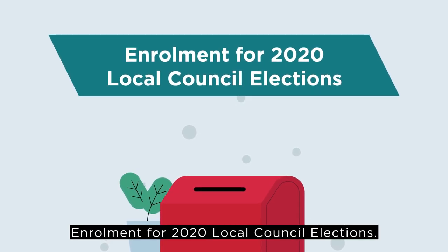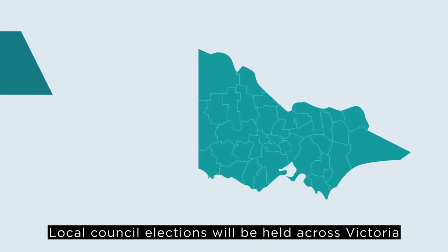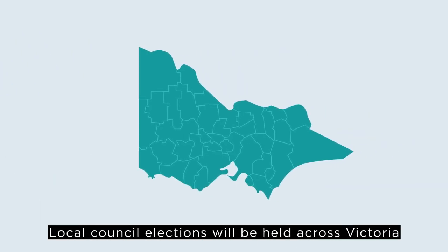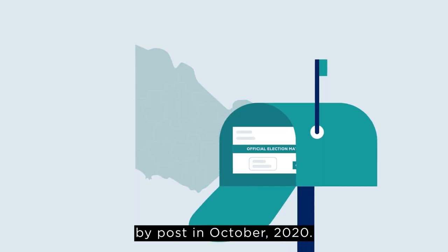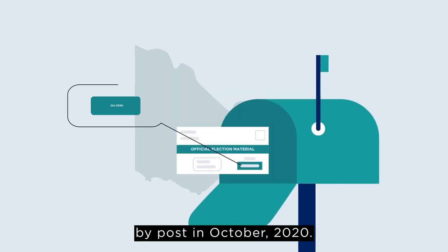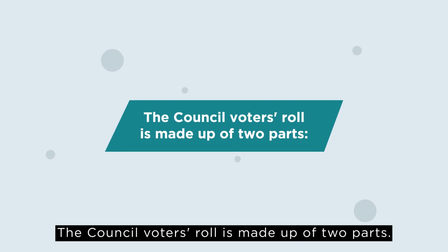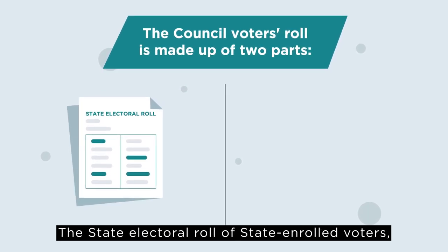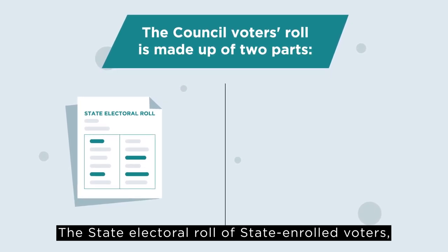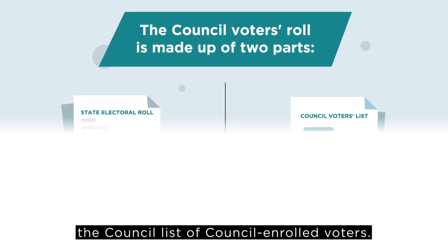Enrolment for 2020 Local Council Elections. Local Council Elections will be held across Victoria by post in October 2020. The Council Voters' Roll is made up of two parts: the State Electoral Roll of State Enrolled Voters, and the Council List of Council Enrolled Voters.